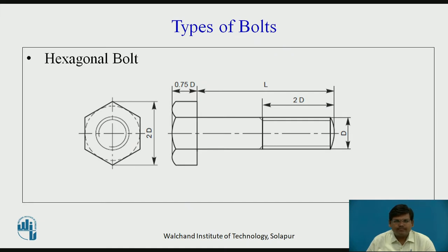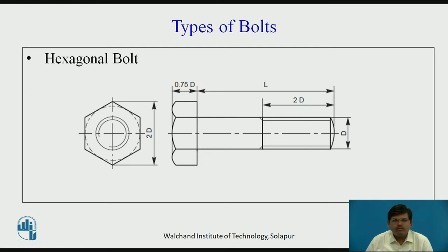Coming to types of bolts — the first and most widely used type is the hexagonal bolt. As you can see on the screen, it has a hexagonal head. This is the head part and this is the shank part, and on the shank part there are threads on the right-hand side. The convention for the thread is shown here. The threading length is 2 times of D.